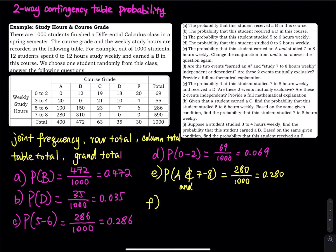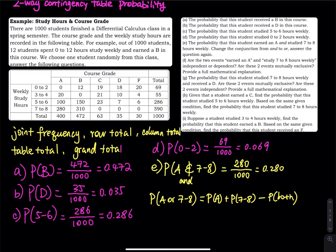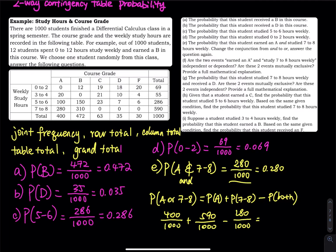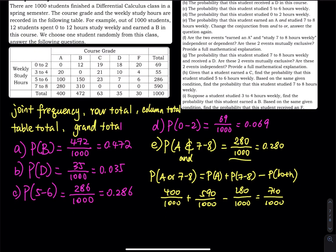Now we change the AND to an OR: probability of A OR 7 to 8. We use the inclusion-exclusion principle: P(A) + P(7 to 8) − P(A and 7 to 8). P(A) is 400 divided by 1,000. P(7 to 8) is the fourth row total, 590 divided by 1,000. Minus both, which is 280 divided by 1,000. So 400 plus 590 equals 990, minus 280 equals 710 divided by 1,000. Make sure all three fractions have the same denominator. That gives 0.710.